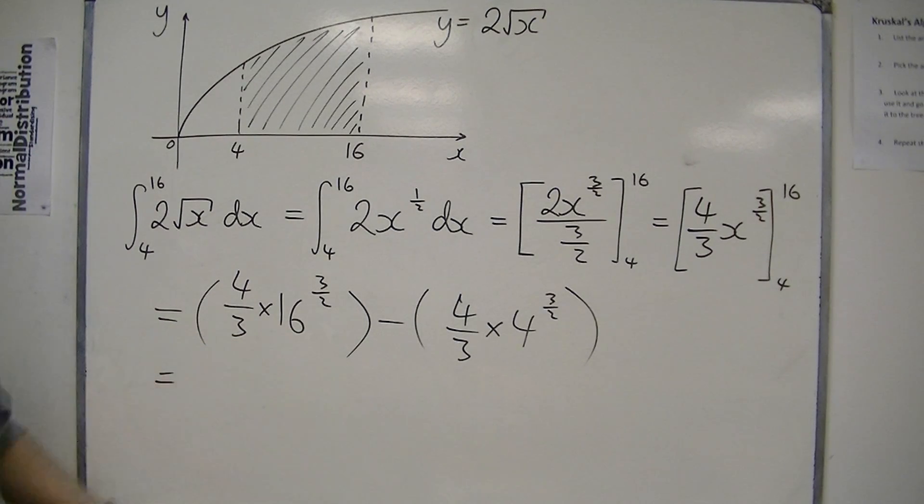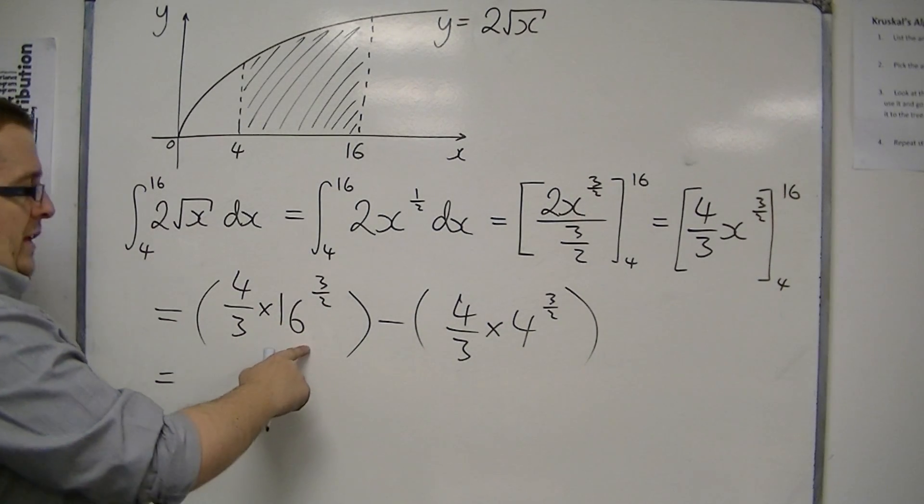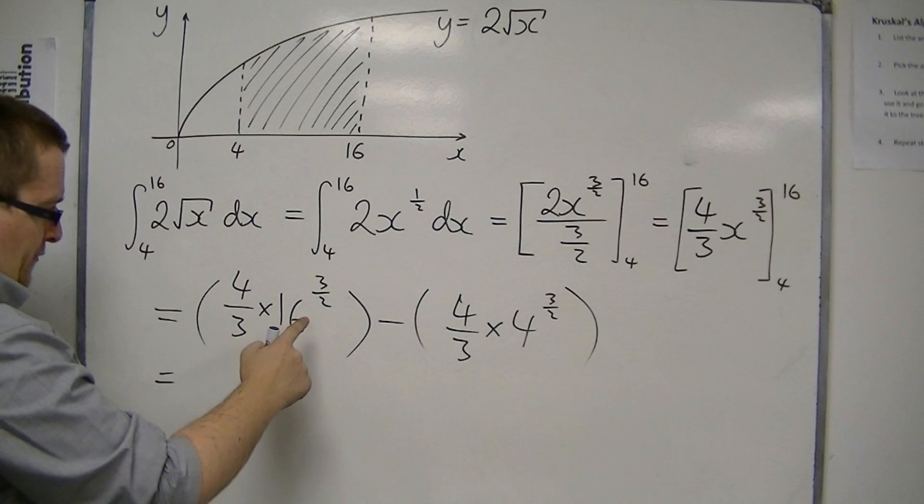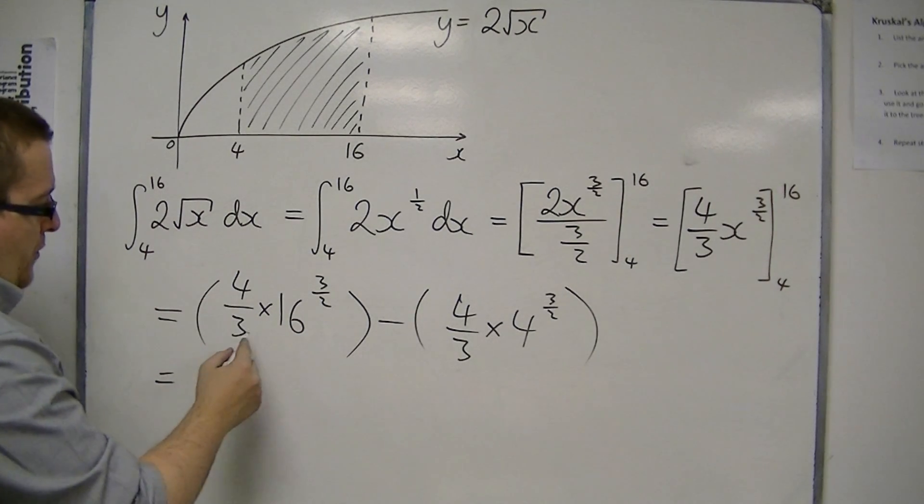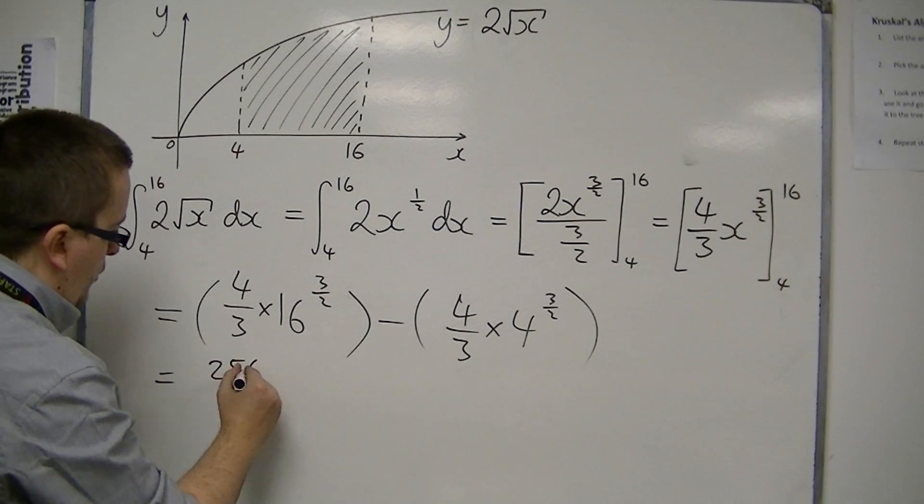Now, 16 to the 3 halves. Well, 16 to the half is 4, so that's 4 cubed, which is 64. And then 4 thirds times 64 is 256 over 3.